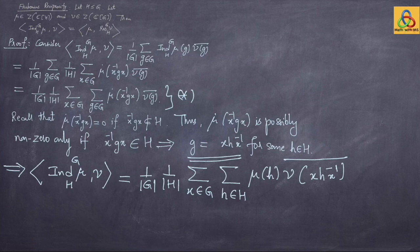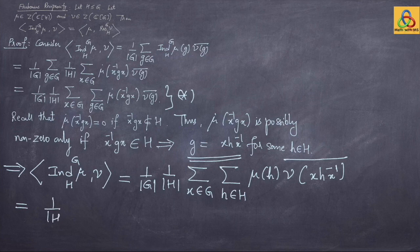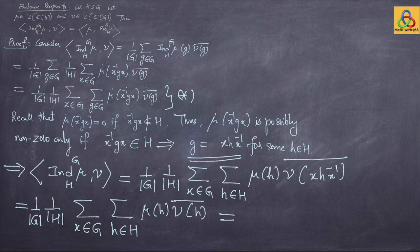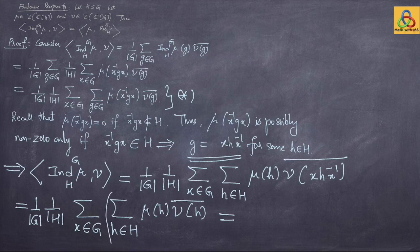The expression becomes (1/|G|)(1/|H|) times the sum over x in G and h in H of mu(h) times nu(h)-bar. Notice that the inner sum over h in H — of mu(h) times nu(h)-bar — is independent of x in G. Therefore you are summing the same expression |G| many times over x, so the |G| factors cancel.